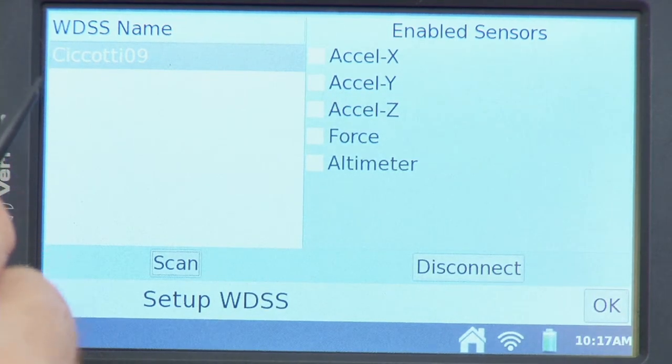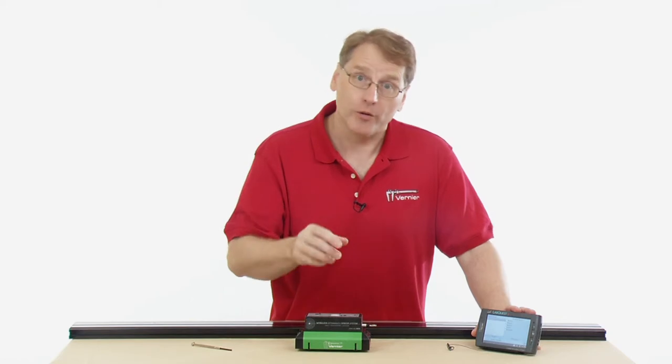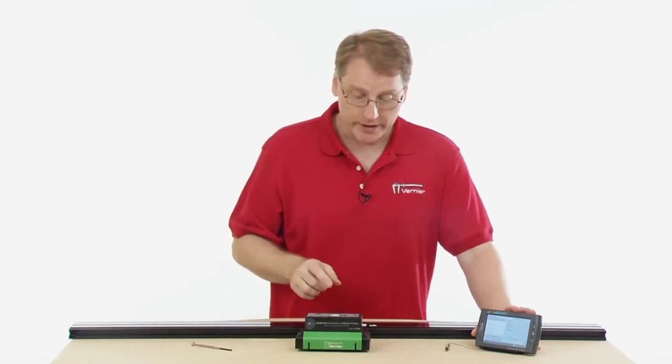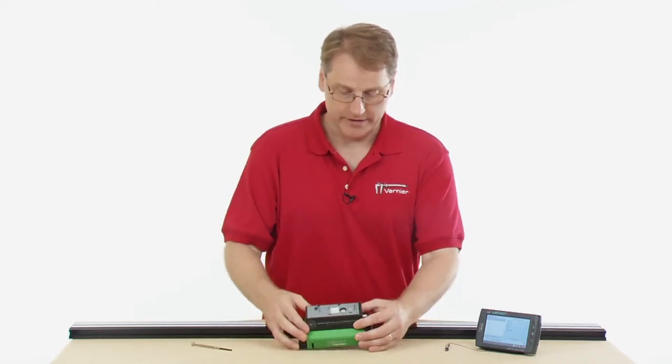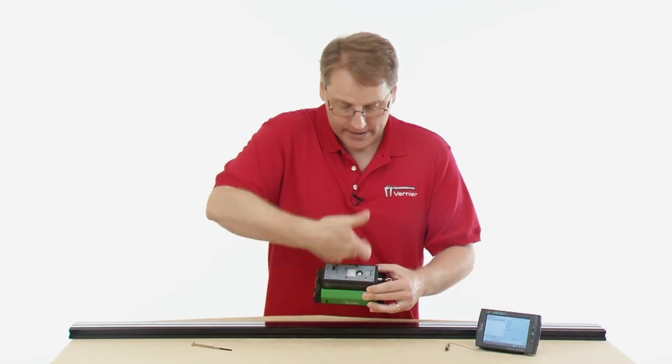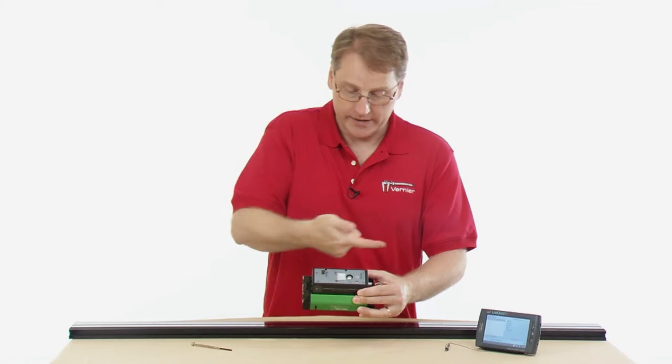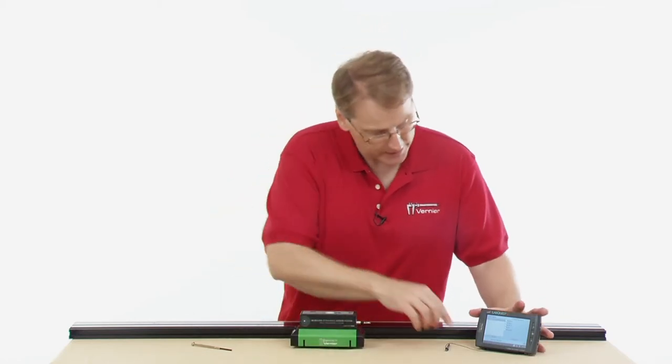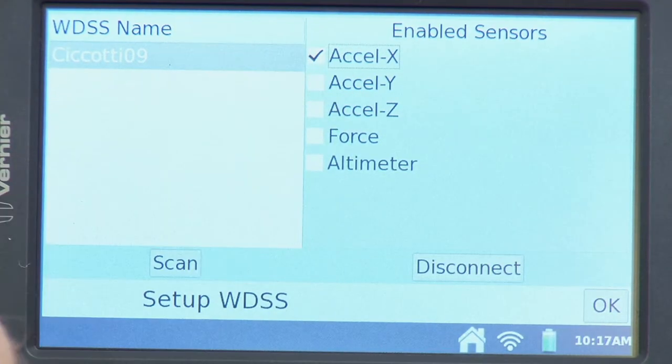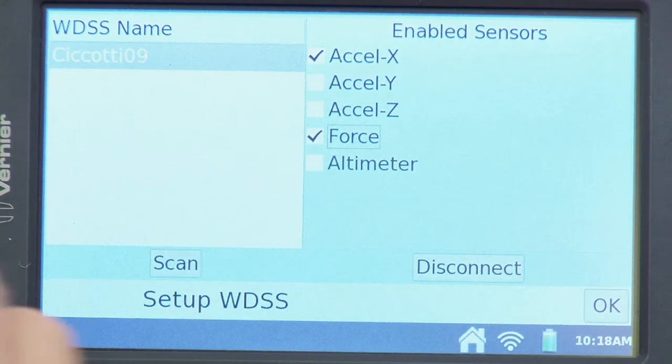It comes up here and asks me what sensors do I want to enable? Do I want the force sensor and three axis? Do I want everything? I could check all the boxes if I did that. For this instance, I really only want the force and the x direction. It defines x is this way, y is this way, and z is this way. I want the force and the x acceleration to be able to do what I'm going to do here. I'm going to check the box next to x, next to force, and I'll say OK.